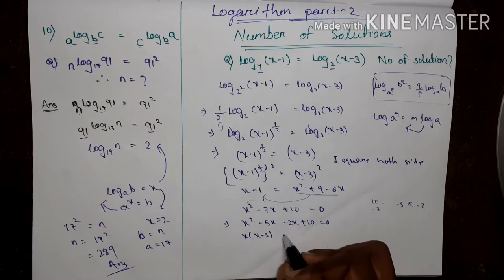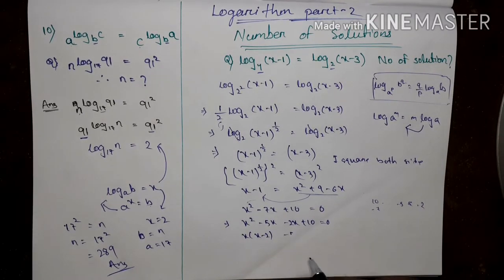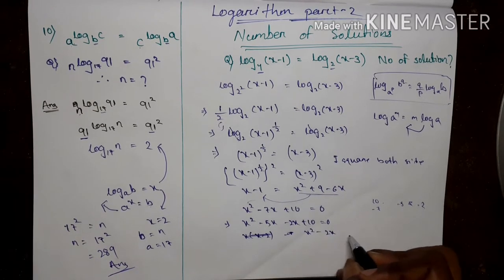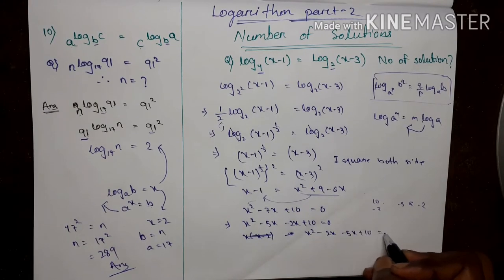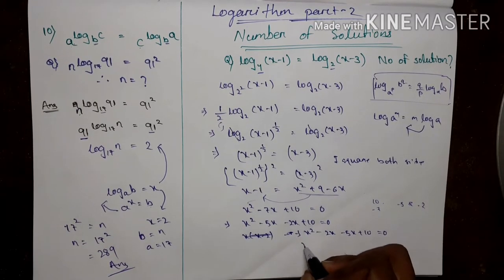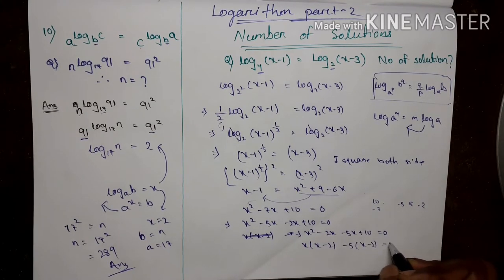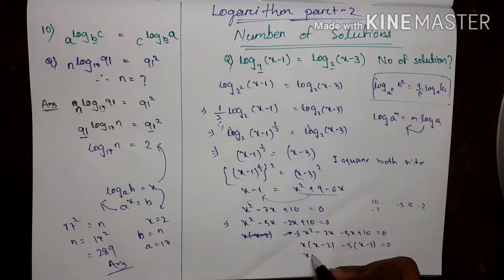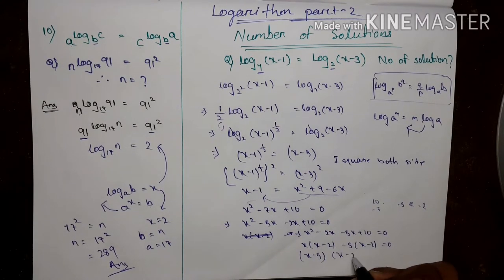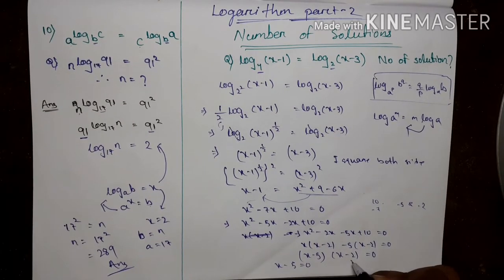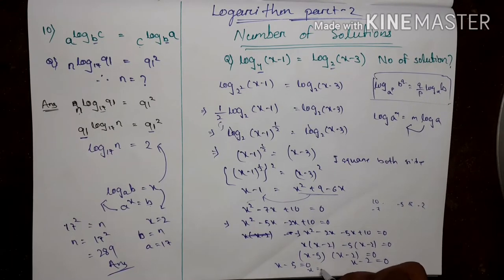Taking common factors: x(x-2) minus 5(x-2) equals 0, giving (x-5)(x-2) equals 0. Therefore x equals 5 or x equals 2.